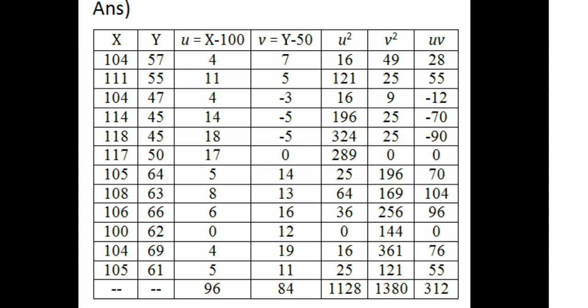With u equal to x minus 100, the u values are: 4, 11, 4, 14, 18, 17, 5, 8, 6, 0, 4, 5. Then v equals y minus 50, giving v values: 7, 5, -3, -5, -5, 0, 14, 13, 16, 12, 19, 11.